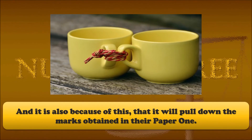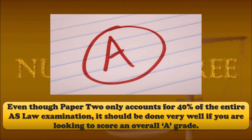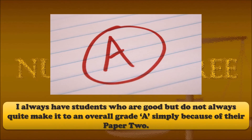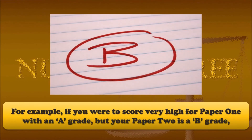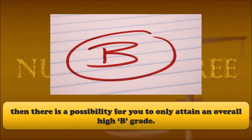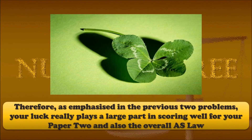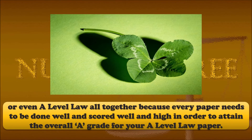Poor comprehension will also pull down the marks obtained in Paper 1. Even though Paper 2 only accounts for 40% of the entire AS Law Examination, it should be done very well if you are looking to score an overall A grade. I always have students who are good but don't quite make it to an overall A simply because of Paper 2. For example, if you score very high for Paper 1 with an A grade but your Paper 2 is a B grade, there is a possibility you will only attain an overall high B grade. Therefore, your luck really plays a large part in scoring well for Paper 2 and for AS Law or A-Level Law altogether.